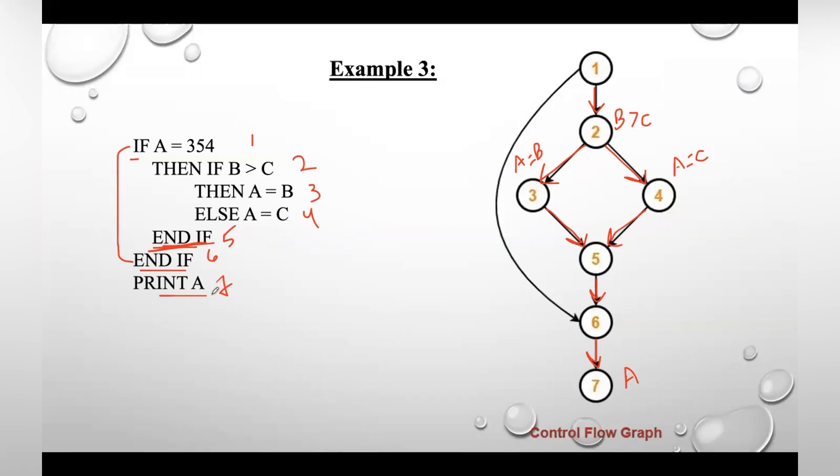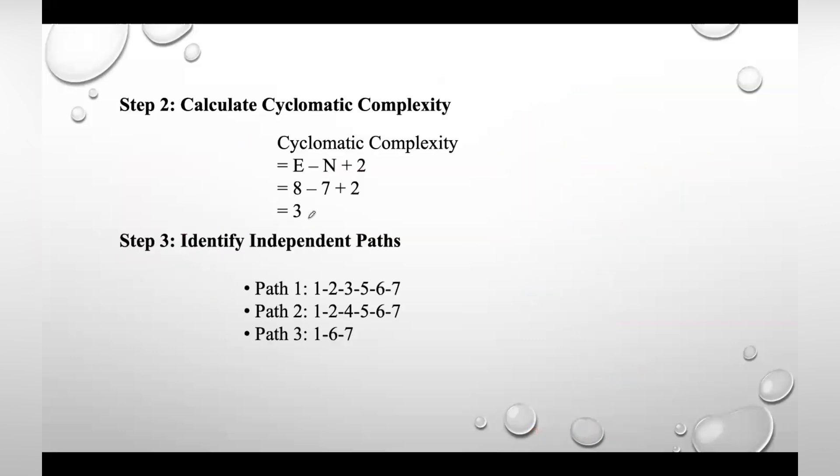How many number of edges do we have in this? One, two, three, four, five, six, seven, eight. Why do we need this additional edge from one to seven? If this condition is true then only we are moving inside. If this condition is false then directly we need to move to end if. That's the reason we consider this direct edge from one to six. So how many edges? Eight. Number of nodes depends on number of blocks. We have seven, so eight minus seven plus two which gives you three. So we need to design three test cases.